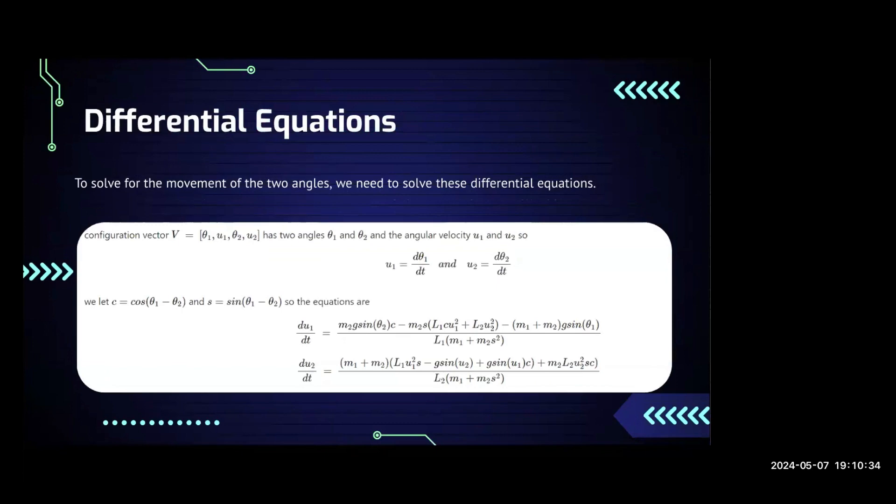We derive these differential equations using calculus. U represents the rate of change of the angle, M1 and M2 represent the mass, L1 and L2 represent the lengths of two pendulums in the double pendulum system, and G is the gravitational force acting upon the pendulum.